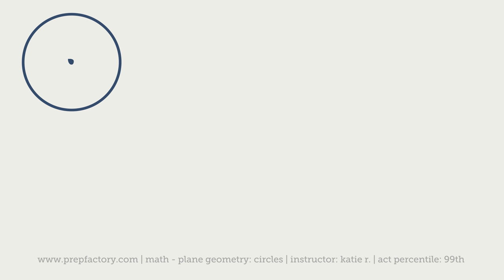Whenever you're dealing with circles, you're going to have to deal with the circle's radius or diameter. The radius is the length from the center of the circle to any point on the outside. The diameter is just twice that — it's the distance from any point on the circle through the center to the point opposite. So radius is half of diameter.